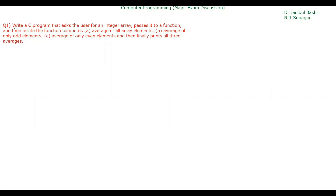The first question was that you have to write a C program that asks the user for an integer array, passes it to a function, and then inside the function computes the average of all array elements, average of only odd elements, average of only even elements, and then finally prints all three averages.